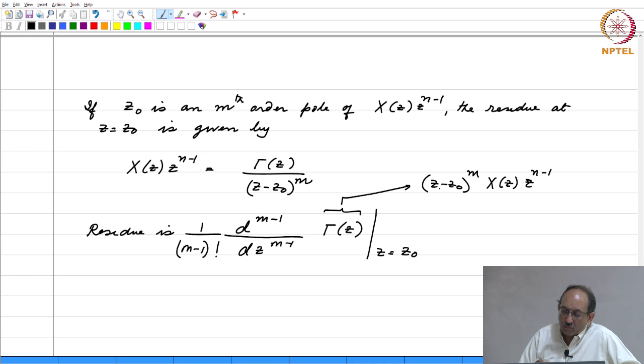Therefore, if you multiply by (z minus z naught) to the 1, then you cancel out that simple pole and you evaluate the remaining expression at z equal to z naught. So, this is no different from what we have seen earlier.